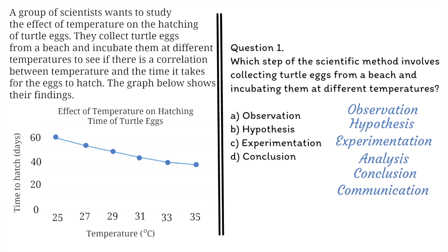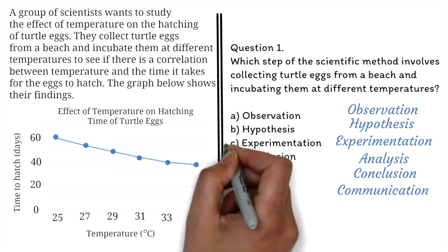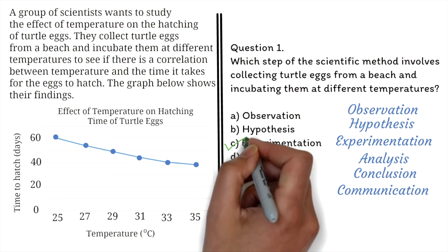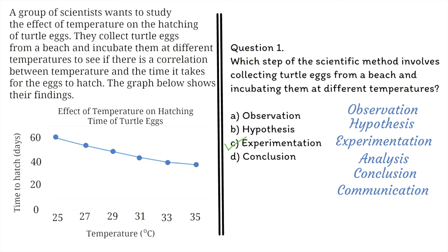For this question, the correct answer is C. Experimentation. This step involves designing and conducting experiments to test the hypothesis formulated. In this case, the scientists are manipulating the temperature of the eggs to determine if it has an effect on the time it takes for them to hatch.